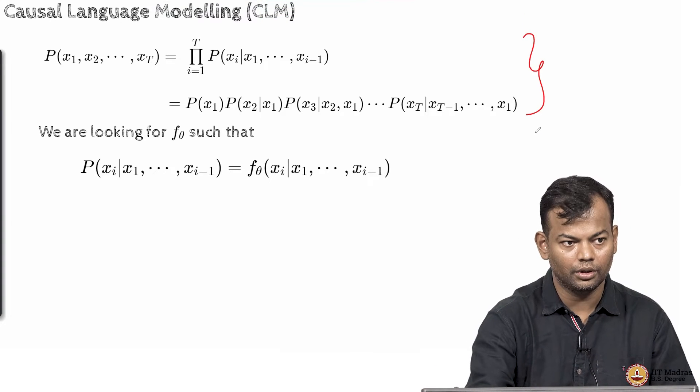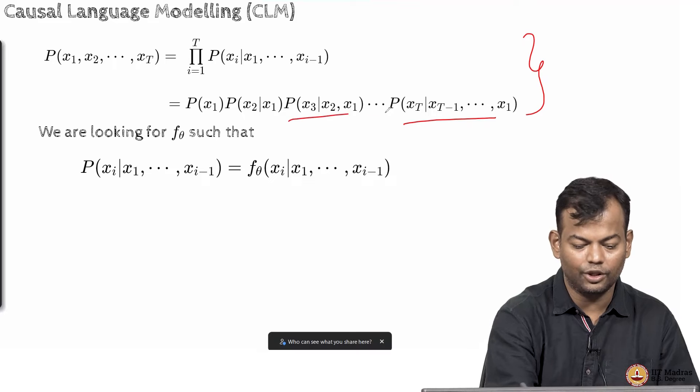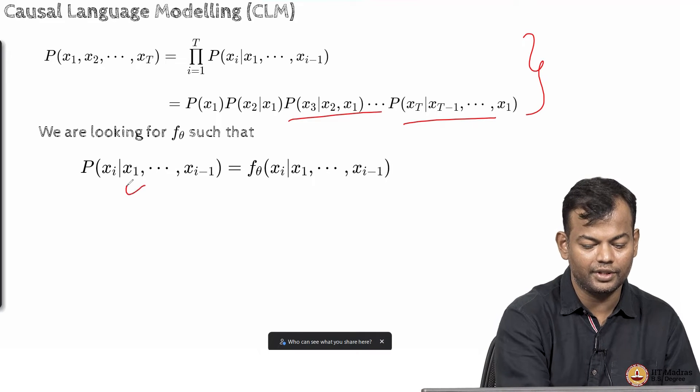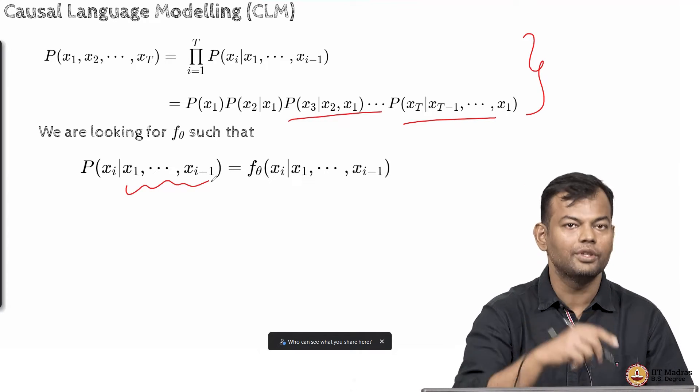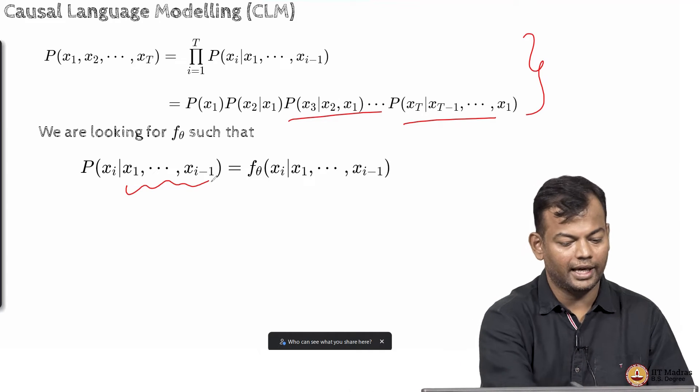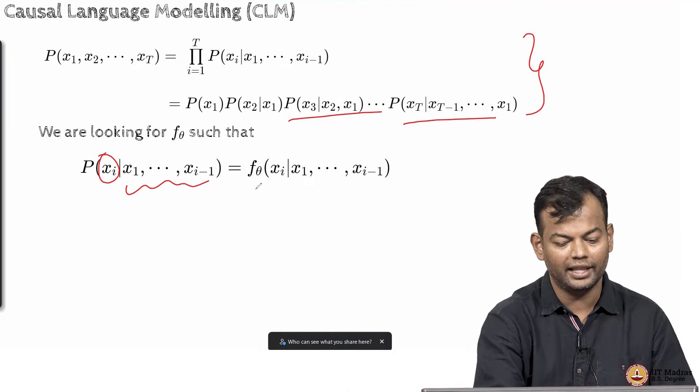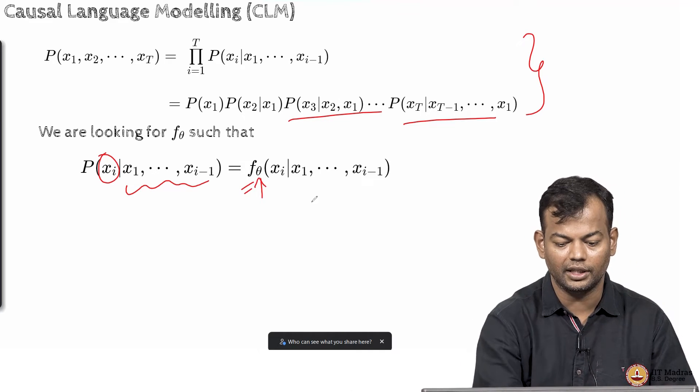Nothing profound happening here. Again, this is just the standard chain rule. Okay? And all of these need to be estimated. So, I just need a function which takes an arbitrary sequence length as input or arbitrary, a sequence of arbitrary length as input and gives me a distribution over the probability and that function will of course, have some parameters theta.